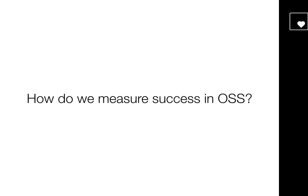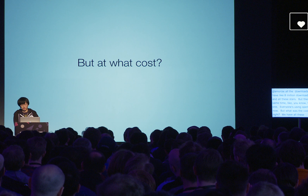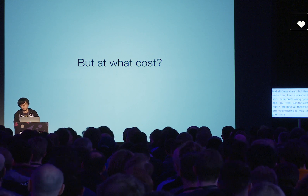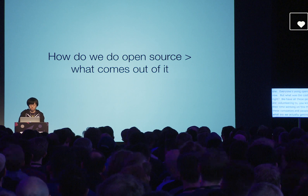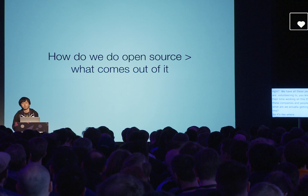So how do we actually measure success in open source? I think we glamorize all the downloads — we have 8 million downloads a month and all these stars. But at the same time, OSS won. Everyone is using open source now. But what was the cost of that? We have all these people volunteering to spend their time working on this thing for all these companies and people. What are we actually getting out of this? I think it's not just the work we put in, but how we do it. I want to make sure that when we ask people to join open source or become maintainers, we figure out how to do it sustainably.